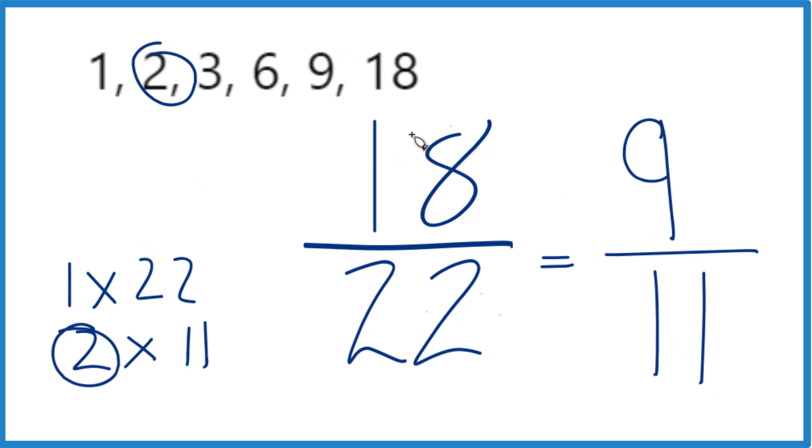So when we simplify 18/22, we get 9/11. Sometimes if you have two even numbers, it's just good to start out and cut it in half. Half of 18 is 9, half of 22 is 11. Sometimes a little quicker.